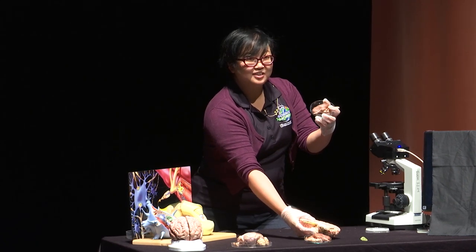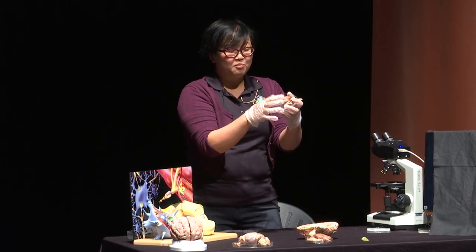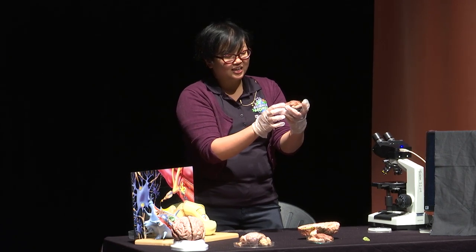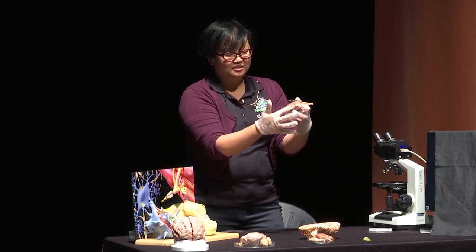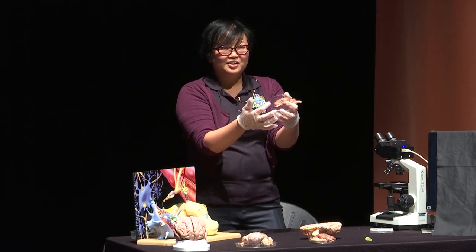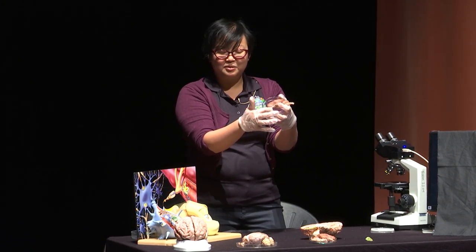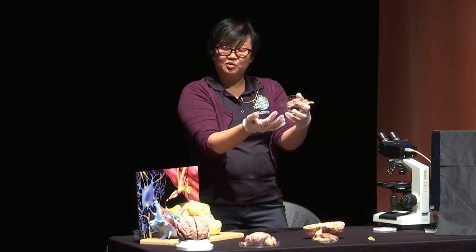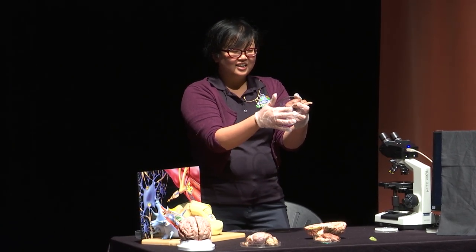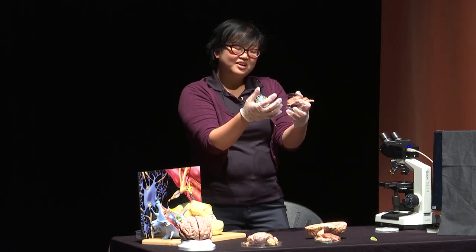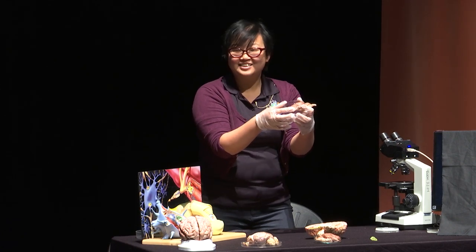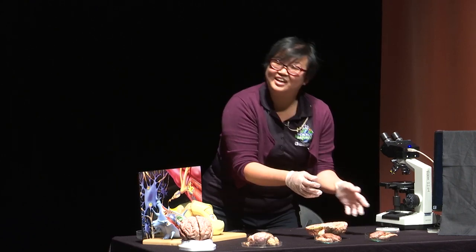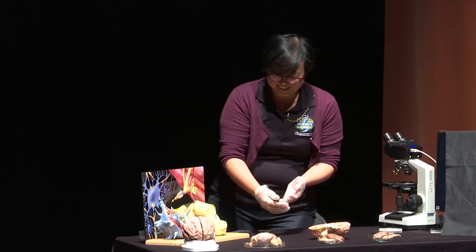One structure that's actually much bigger in the sheep but really small in the human is its olfactory nerve. And olfactory is used for smell. So sheep have really tremendous ability to smell and distinguish scents, whereas humans don't really have that capability. So scientists study a lot of different types of brain tissue in order to better understand how our brain works. Thanks Kathy.